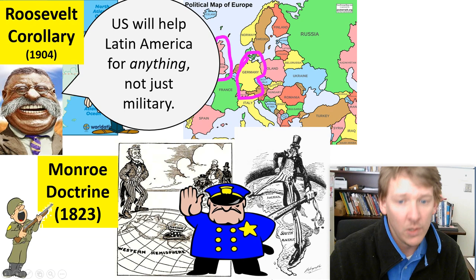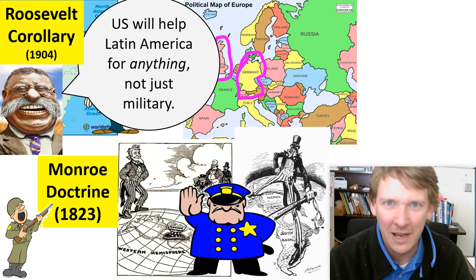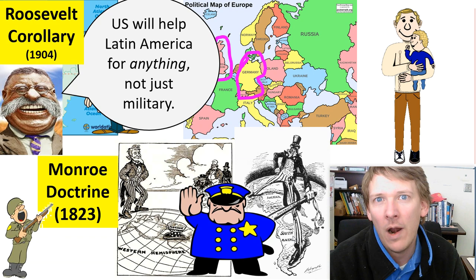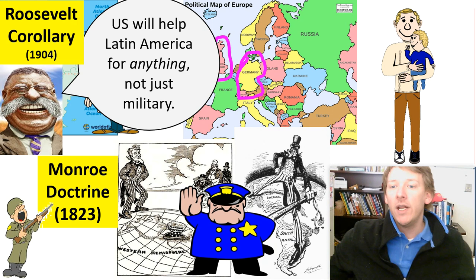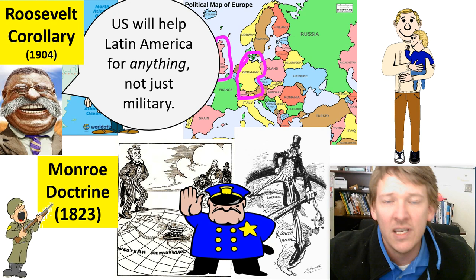Basically, we become the self-appointed world police of North America and South America. South America didn't appoint us — Brazil, Venezuela, these countries didn't ask us to be the police or their protector. This is very paternalistic: we assume we're going to take care of North and South America, and America is in control simply because we said so. No one appointed us, no one approved it, but we granted ourselves permission to make the rules.